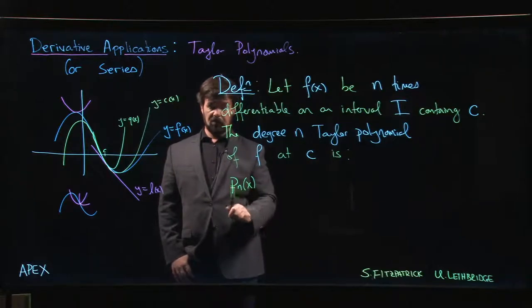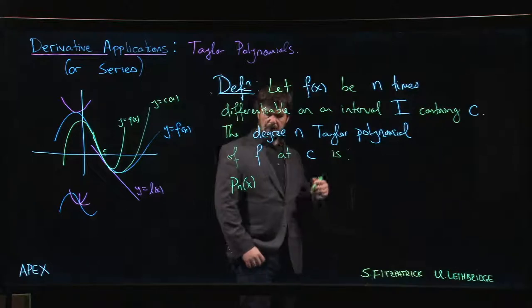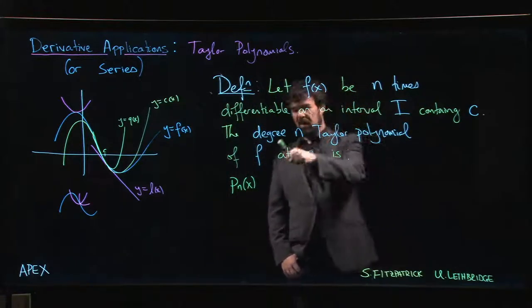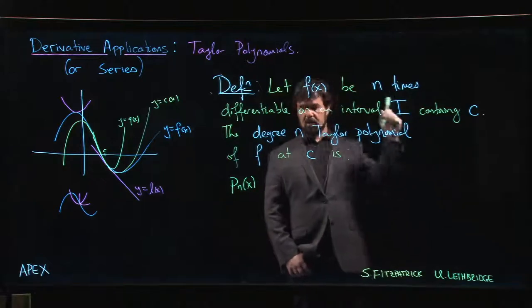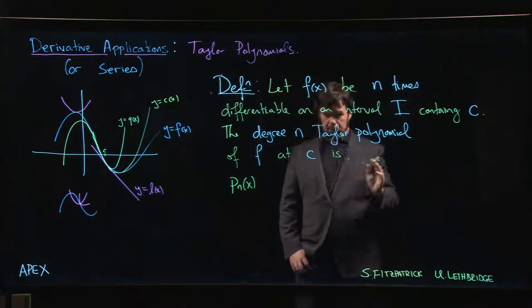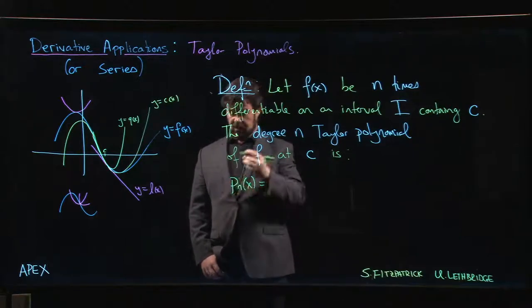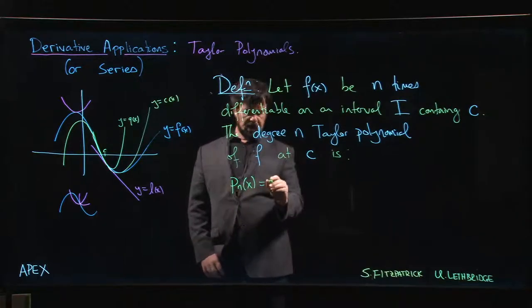The notation used in the Apex textbooks is p sub n. Sometimes you'll see additional decorations in the subscript - you might see p sub n comma f to indicate the function f, you might see a comma c to indicate the point c. Most of the time we hope that's clear from the context and just use p sub n, so p_n(x).